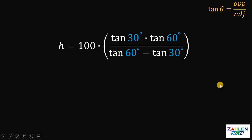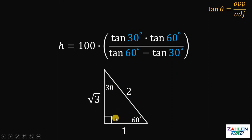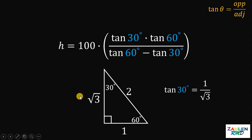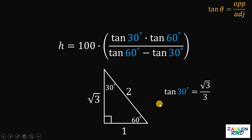To get the exact values of tan(30°) and tan(60°), we use the special 30-60-90 right triangle, where the opposite side of 30° is 1, the opposite side of 60° is √3, and the hypotenuse is 2. Using this, tan(30°) = 1/√3 = √3/3 after rationalizing. And tan(60°) = √3/1 = √3.